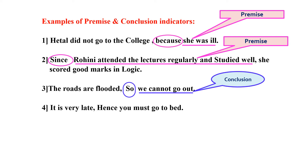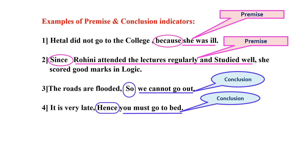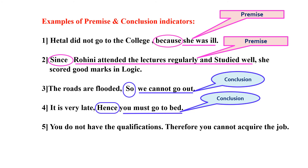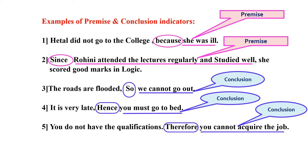Now the fourth example: It is very late. Hence, you must go to bed. The word 'hence' indicates that 'you must go to bed' is the conclusion, and 'it is very late' is the premise which supports it. Fifth example: You do not have the qualifications. Therefore, you cannot acquire the job. The word 'therefore' indicates that 'you cannot acquire the job' is the conclusion, and 'you do not have the qualifications' is the premise.